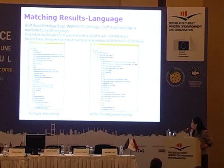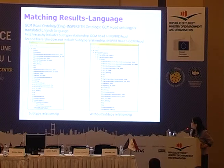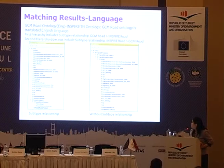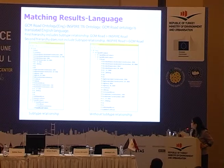First matching results: GCM road ontology versus INSPIRE transport network ontology. For example, GCM road is more general than INSPIRE road, including the subtype relationship. Second matching result: INSPIRE road is more general than GCM road.